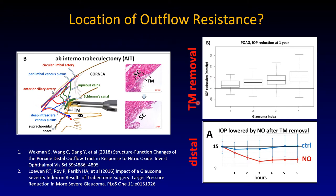In one of our studies, the more advanced the glaucoma, the larger the pressure reduction after trabecular meshwork removal. This means patients with a mildly diseased trabecular meshwork who have it removed get a small decrease, while patients with a large resistance at the level of the trabecular meshwork can experience quite significant pressure drops.